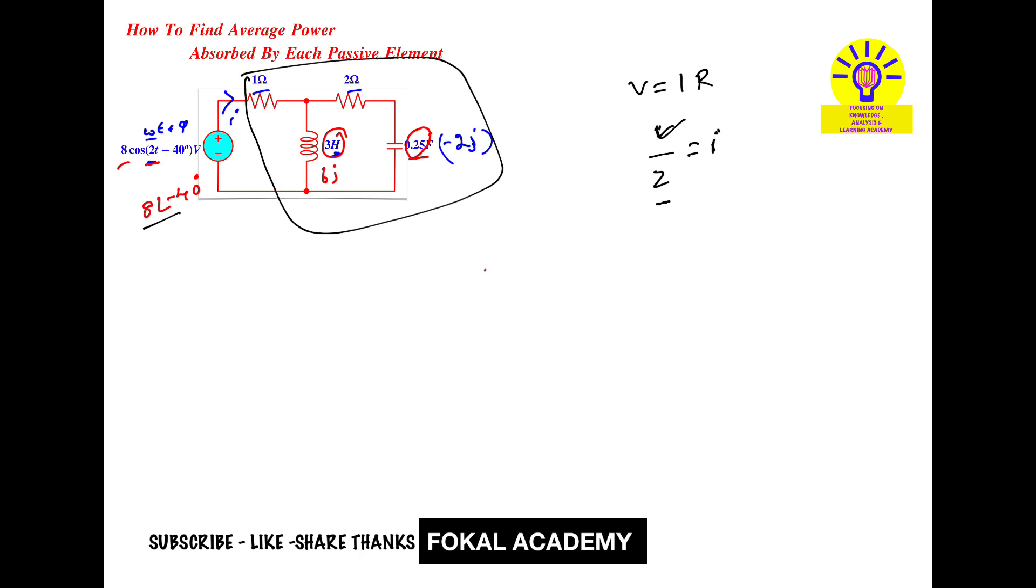These two branches are in parallel. First, make this branch a single impedance. The resistor and capacitor impedance are in series: 2 ohms plus -2j impedance gives 2 - 2j ohms for this branch. This branch and the 6j branch are in parallel.